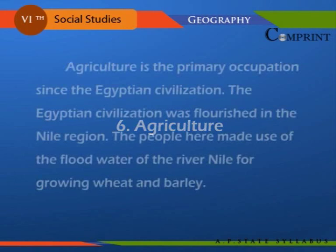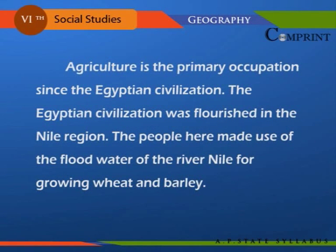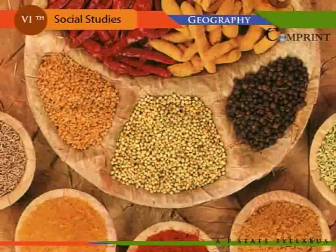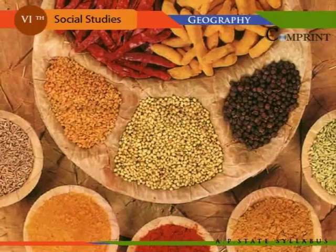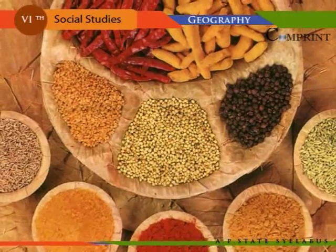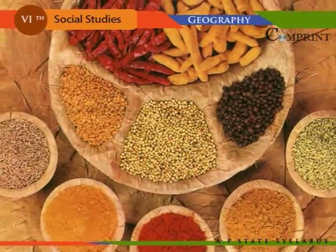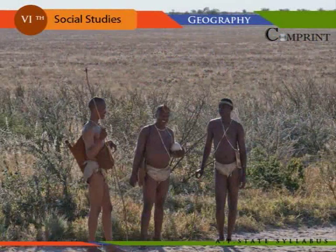Agriculture has been the primary occupation since the Egyptian civilization, which flourished in the Nile region. The people made use of floodwaters of the River Nile for growing wheat and barley. The cultivation of date palms, millets, and wheat is practiced near oases in the Sahara. Hunting is the primary occupation of the people of the Kalahari desert.